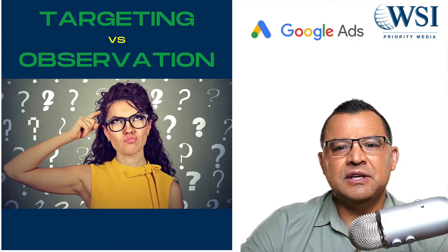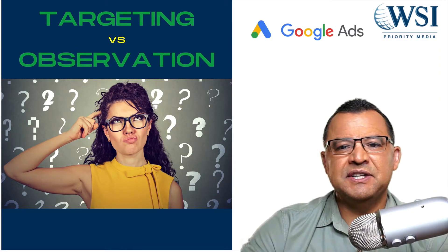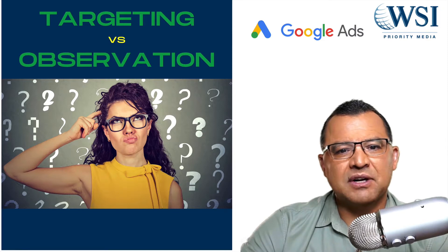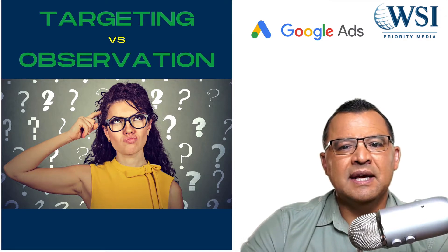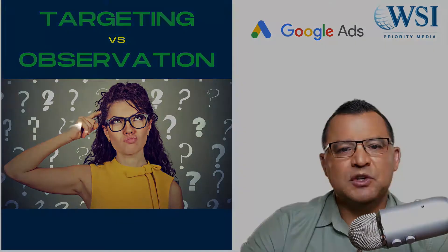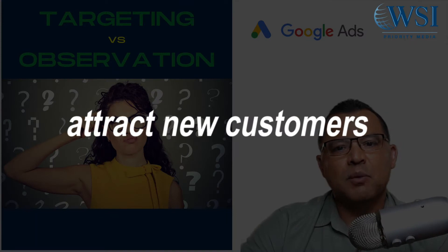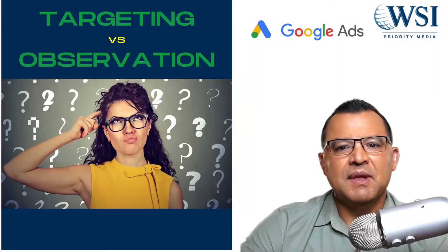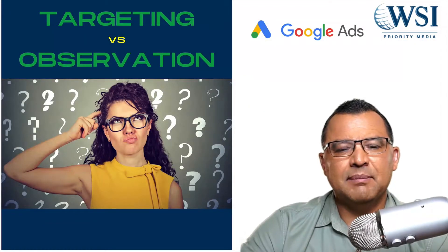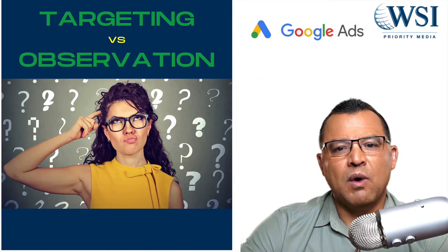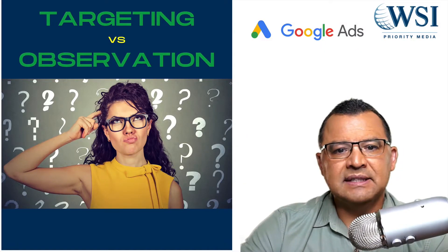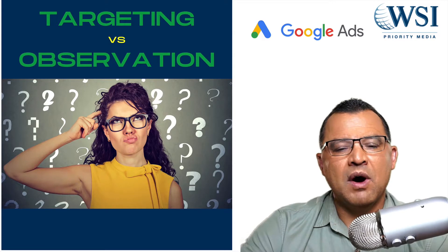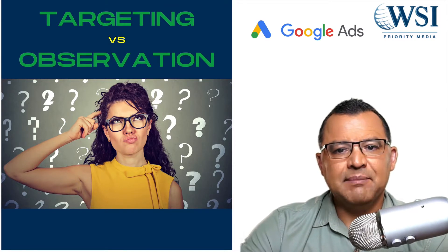When choosing to use targeting versus observation Google Ads features, there are different options available and each one is going to help you attract new customers. You want to start by setting up your ad targeting by choosing criteria like audiences you want to reach, or content you want your ads to actually appear on.